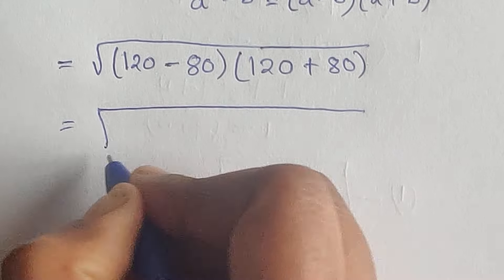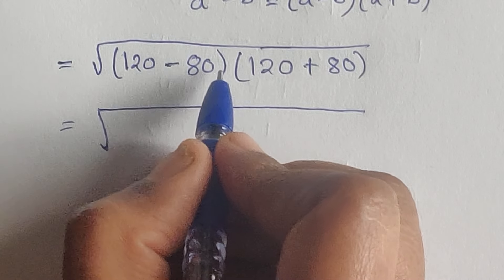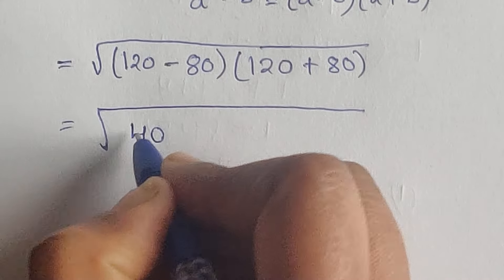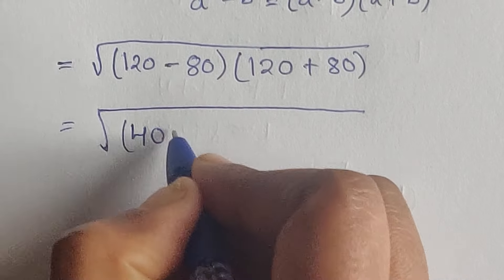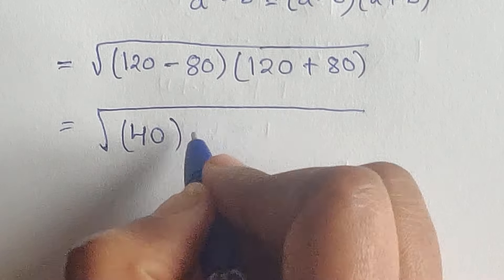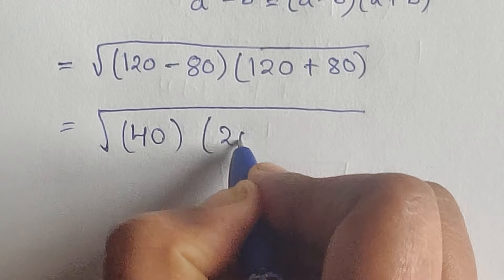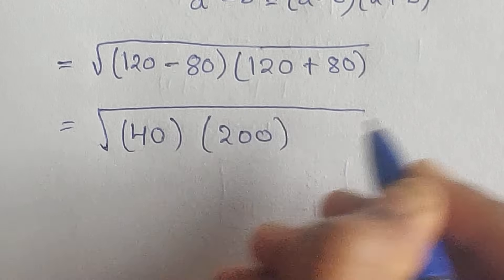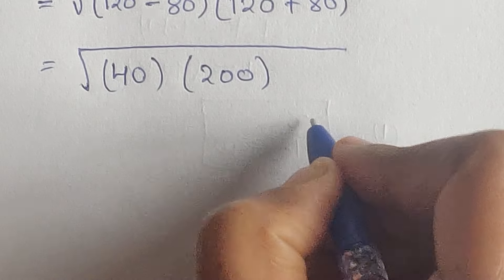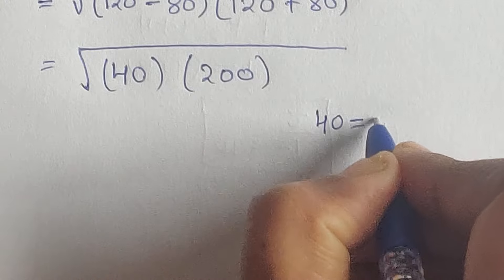So we have the square root of (120 - 80), which equals 40, and (120 + 80), which equals 200.